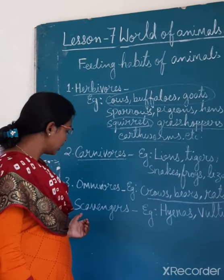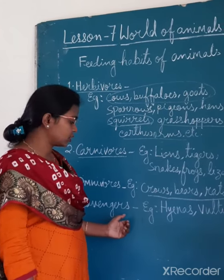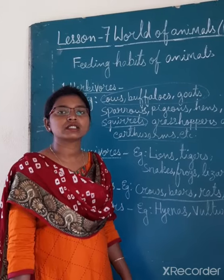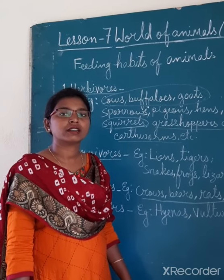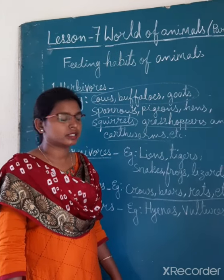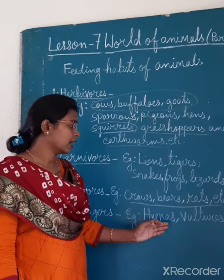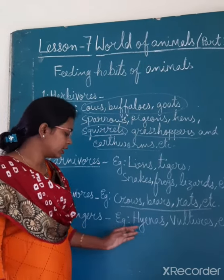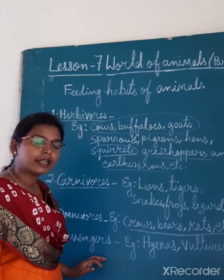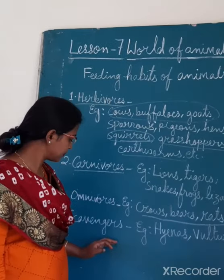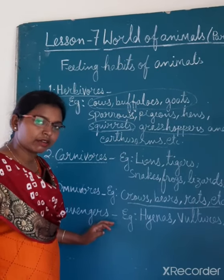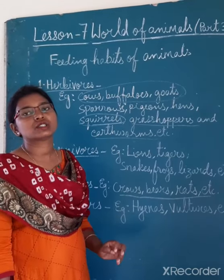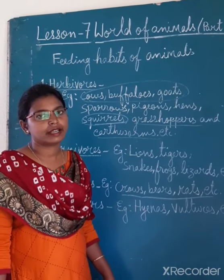Next, fourth point, scavengers. Scavengers are those animals who eat the flesh of dead animals. Examples are hyenas, vultures, etc. They eat the flesh of dead animals. Once again, what are scavengers? Scavengers are those animals who eat the flesh of dead animals.